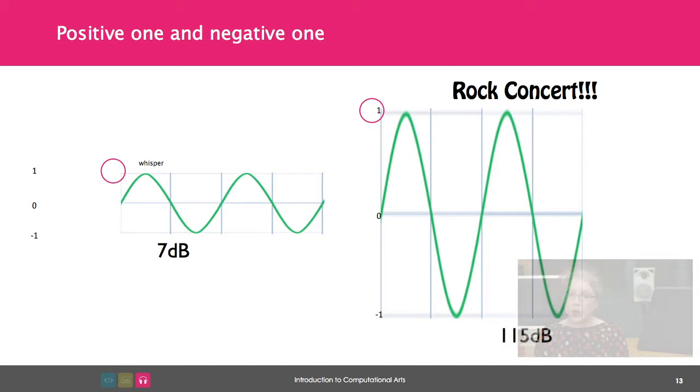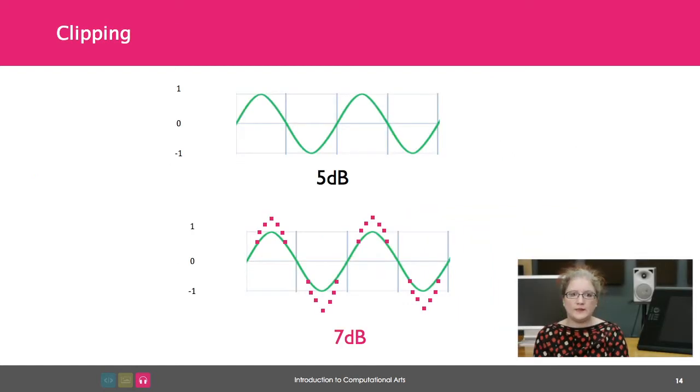If you're recording the rock concert, you would want 115 decibels to correspond to one and negative one. If you set your recording level so that five decibels is the highest pressure that it can record, what happens at seven decibels?